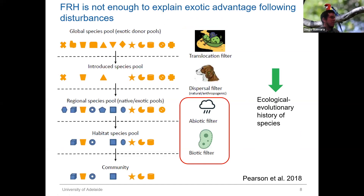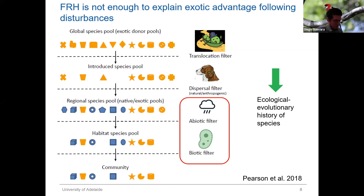Apart from this, we have to understand that there are a number of filters that take place in the invasion of a species. First, we have the translocation and dispersal filter — pretty much how the exotic species arrives to the system. Once in the system, we have the abiotic and biotic filters that act on the species pool, and we have our final vegetation community from these filters. At the same time, each species has an ecological and evolutionary history, meaning some could be more aggressive or resistant, which will facilitate their establishment.